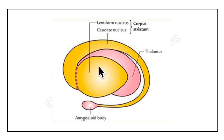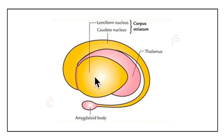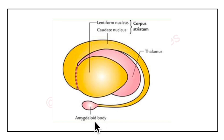Here is a picture showing the parts of the basal nuclei as well as the thalamus. The basal nuclei are composed of three parts: first is the corpus striatum, second is the amygdaloid body, and third is the claustrum.